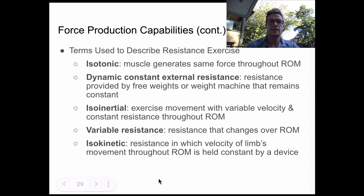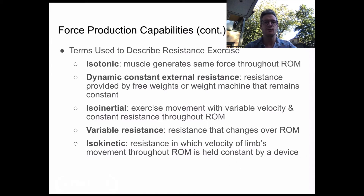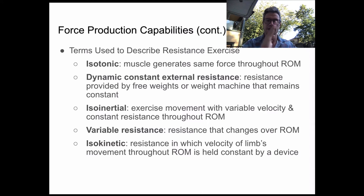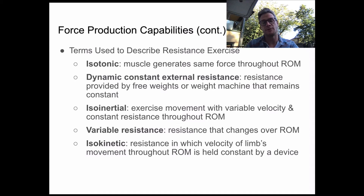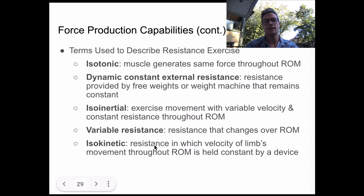Last but not least, isokinetic resistance, in which the velocity of the limb's movement throughout the range of motion is held constant by a device. There are a few companies out there that try to replicate this; however, based on people's biomechanics, they're very tricky. You might see some of these machines in a rehabilitative clinic. The idea is that regardless of the range of motion, it's going to have that same constant resistance. These are typically only for single muscle groups — like a leg extension machine or a hamstring curl — and you don't typically see them for compound-type lifts. You need a machine to calibrate constant resistance depending on the angle of movement or how fast you're moving.